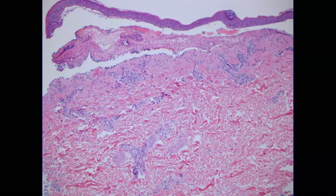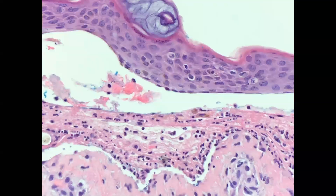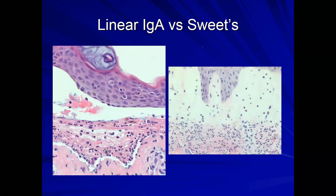Here's a subepidermal blister with fluid and a clean split epidermis, with blister fluid filled mostly with neutrophils — making you suspicious of a neutrophilic autoimmune blistering disorder. Direct immunofluorescence is needed to confirm these diagnoses. In contrast, blistering disorders with a lot of dermal edema — such as Sweet's syndrome — show a dense neutrophilic infiltrate with strands being pulled apart through the fluid. That's what edema blisters look like, versus autoimmune blistering disorders with a clean separation.